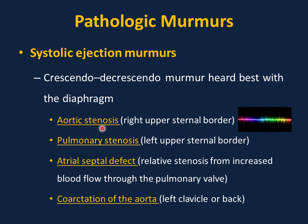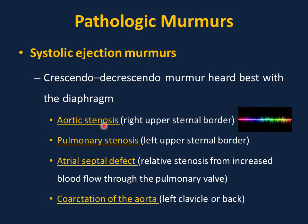Pathologic murmurs: the first type is systolic ejection murmur, a crescendo-decrescendo murmur best heard with the diaphragm. Aortic stenosis is best heard at the right upper sternal border. Pulmonary stenosis is best heard at the left upper sternal border. Atrial septal defect produces a systolic ejection murmur due to relative increased blood flow through the pulmonary valve, heard at the left upper sternal border. Coarctation of the aorta produces a systolic ejection murmur heard at the left clavicle or the back.